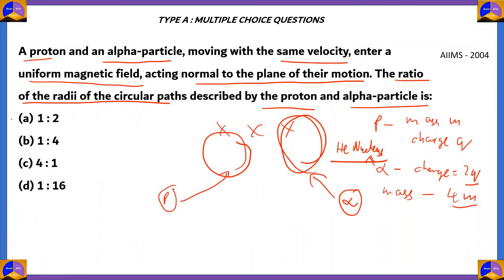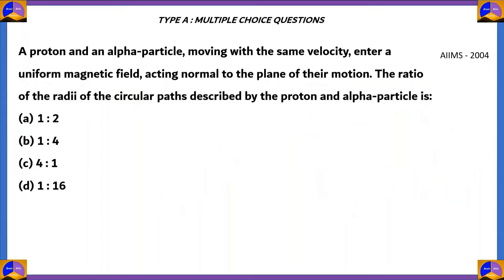That is found in option A, which is the right option. A ratio of 1:4 would have applied if there was no change in charge but only a change in mass. Ratios like 4:1 and 1:16 apply in other scenarios, not for a proton and alpha particle moving perpendicular to a magnetic field. The radius of the proton varies with the radius of the alpha particle in the ratio 1:2, which is option A.